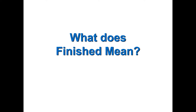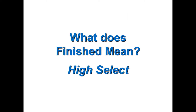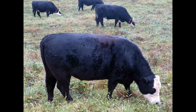For both grass-fed and grain-fed animals, Kenny and Greg define 'finished' as achieving at minimum a high-Select marbling grade, with a goal of low Choice, and occasionally mid-Choice when everything goes right. About 90% of their animals grade high Select to low Choice. Greg shows a photo of four animals that all graded low Choice, harvested about two to three weeks after the photo was taken.